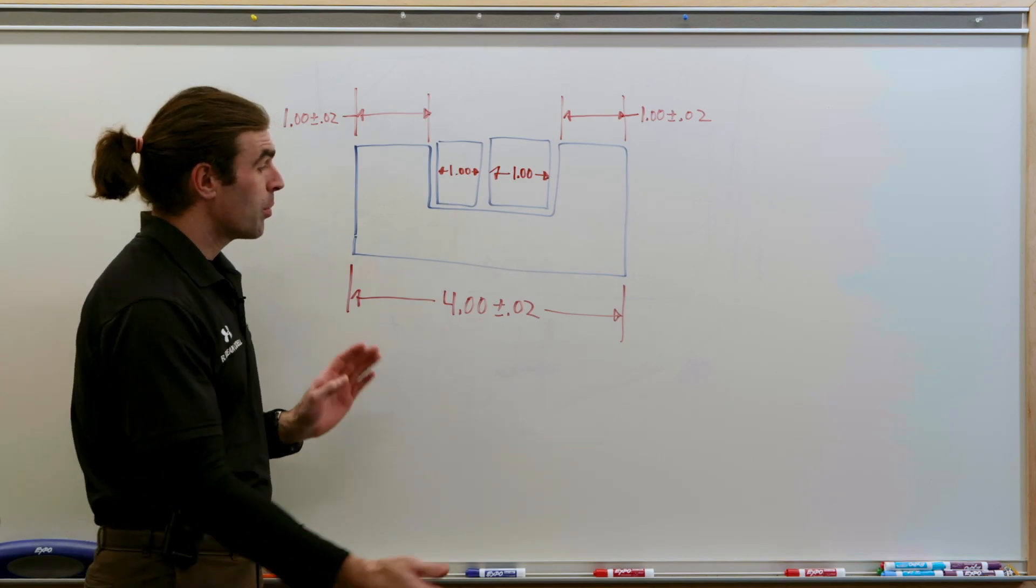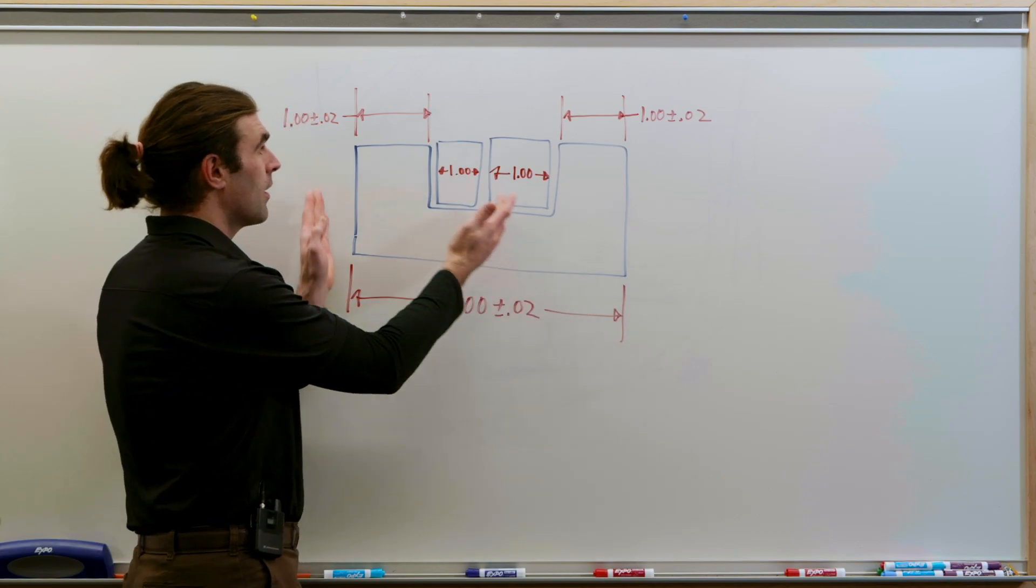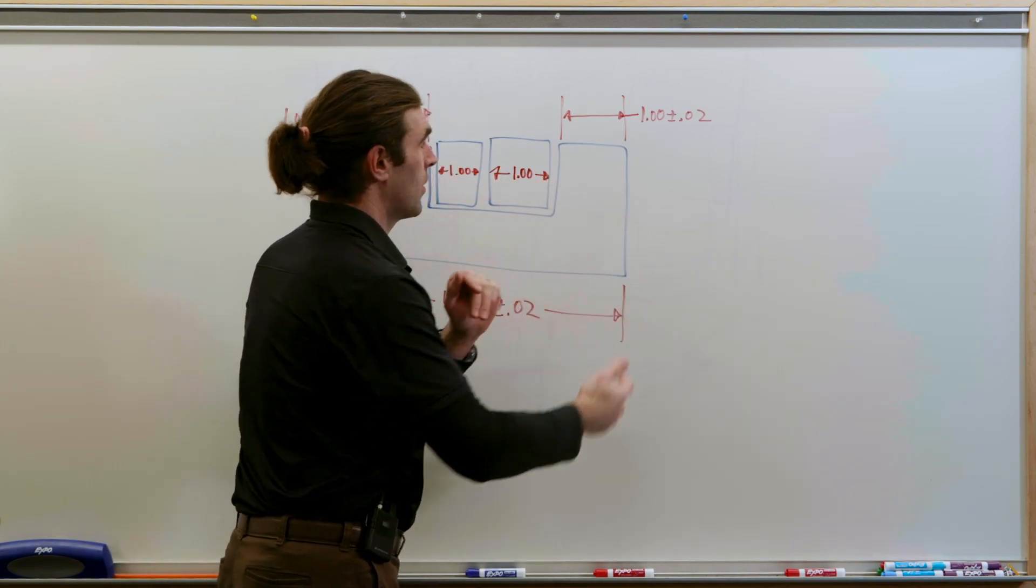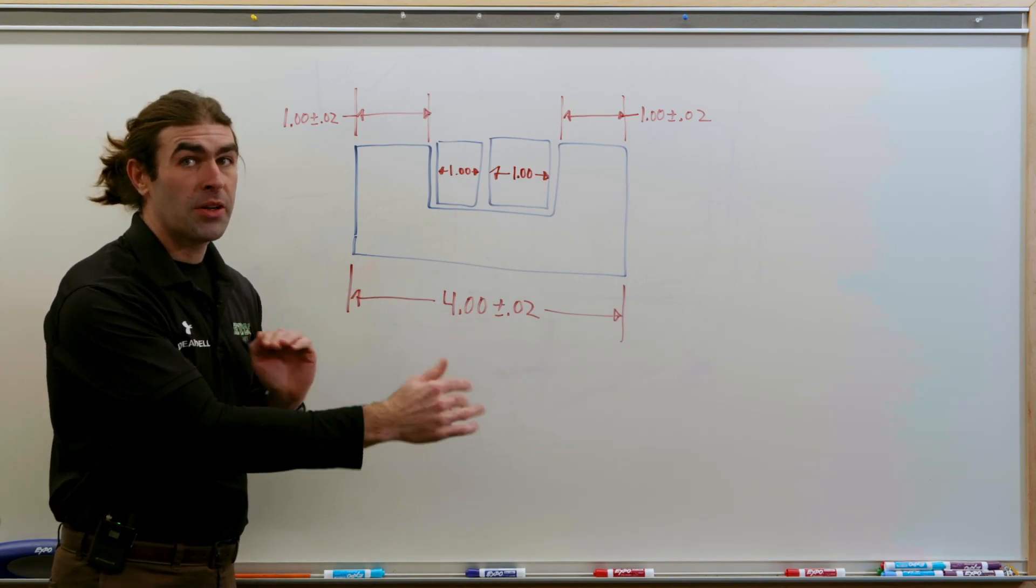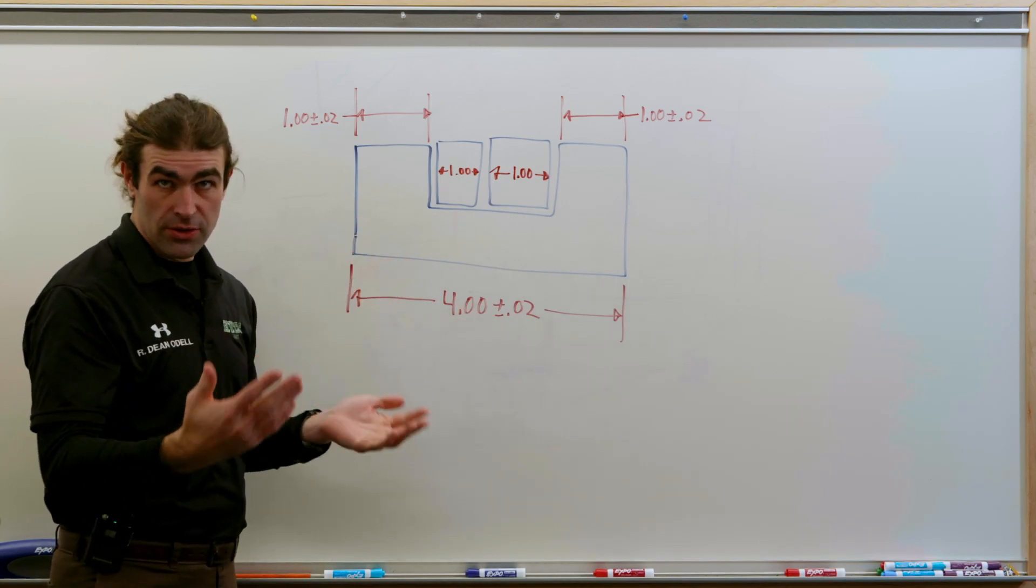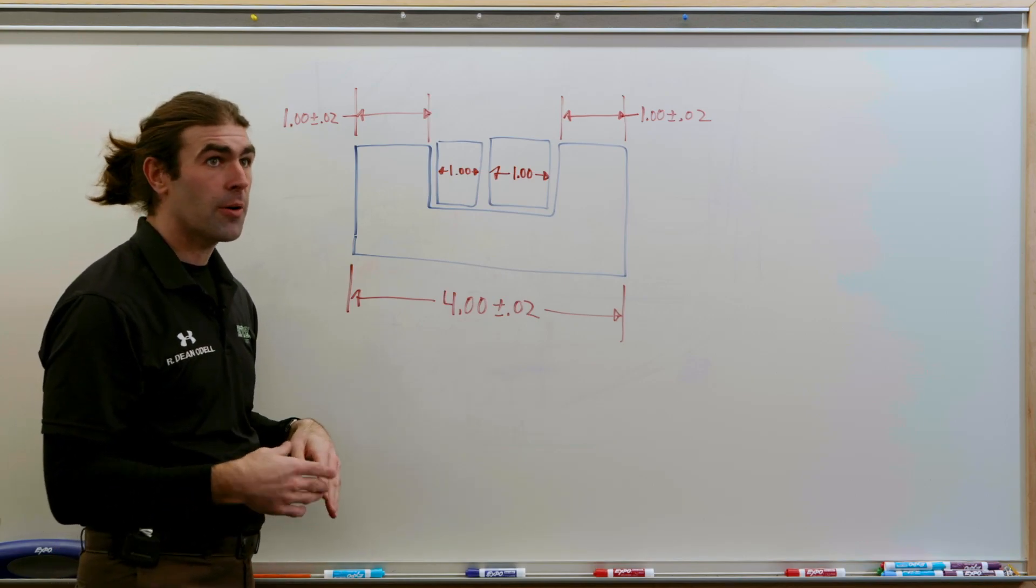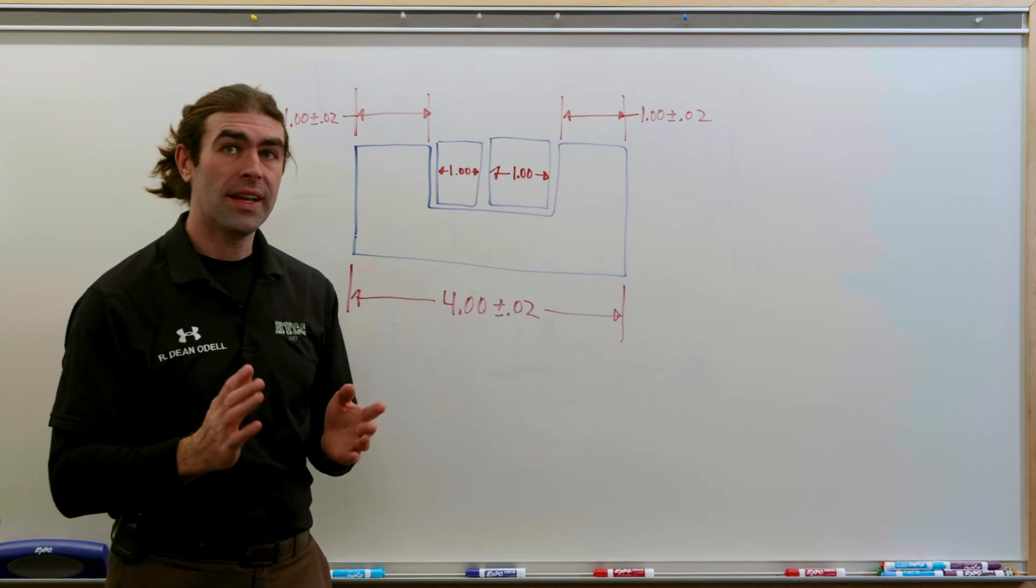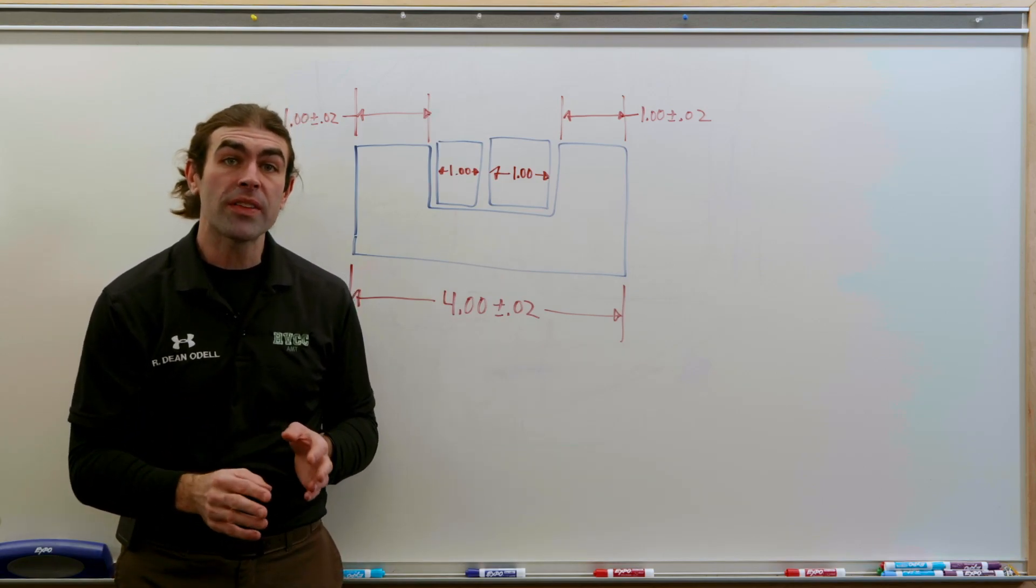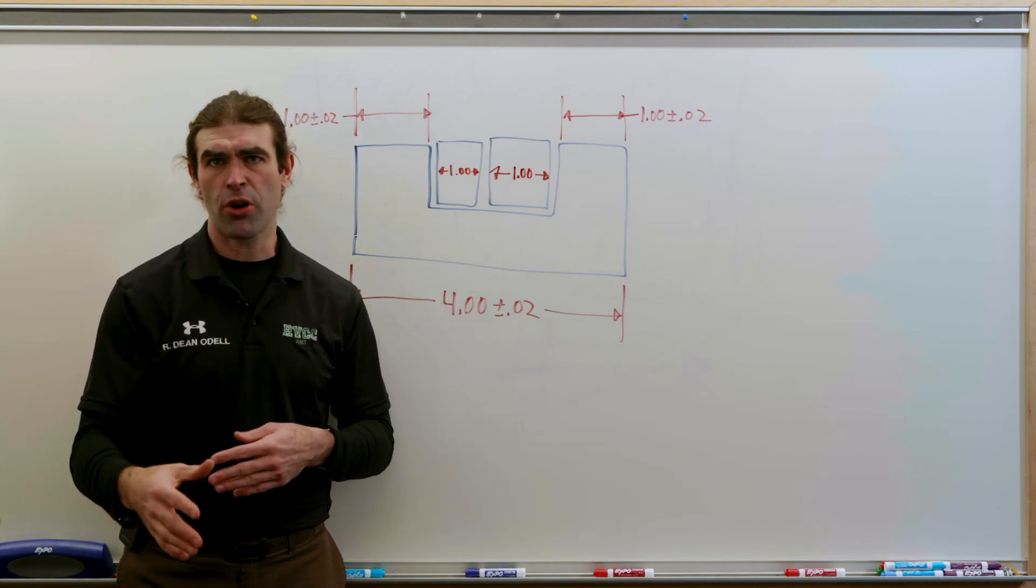Now I've applied an overall dimension, a dimension on this side of the U, and a dimension on this side of the U. We're only considering left and right dimensions, not up and down dimensions to make the diagram simpler. Now we're going to say each block is one inch across. I won't put a tolerance on that, just consider them perfect for now.